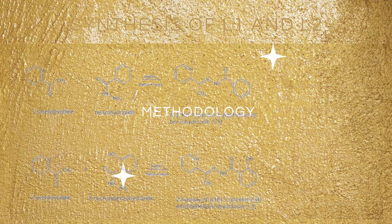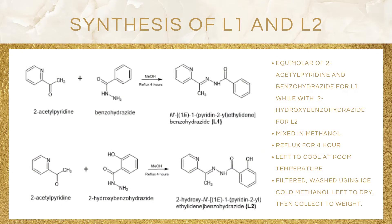Moving on to the methodology, the synthesis of Ligand 1 and Ligand 2 were done using a combination of 2-acetylpyridine and 2-hydroxy benzohydrazide for Ligand 2, and benzohydrazide for Ligand 1. The procedure for both ligands uses the same method, where the mixture of starting materials is mixed in methanol and refluxed for four hours, then left to cool at room temperature, filtered, washed, and dried under the fume hood before being collected.